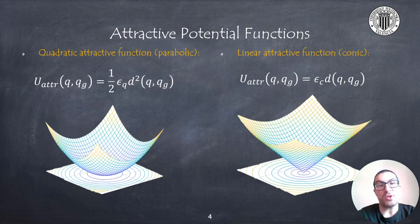While the conic function is proportional to the distance between the robot and the goal, however in the vicinity of the goal it changes abruptly, having a first order discontinuity.